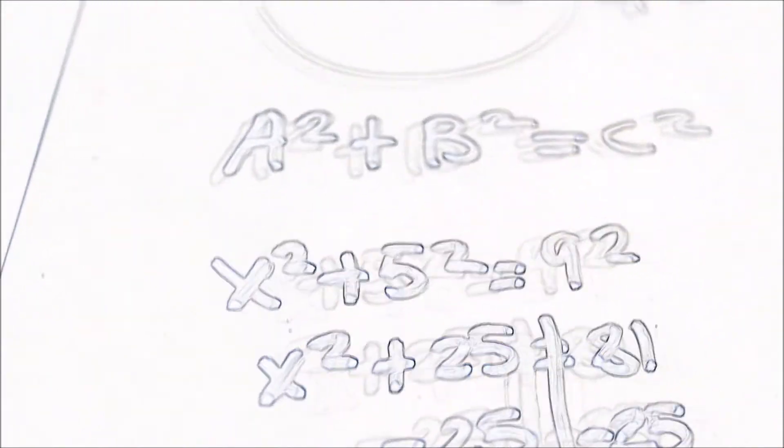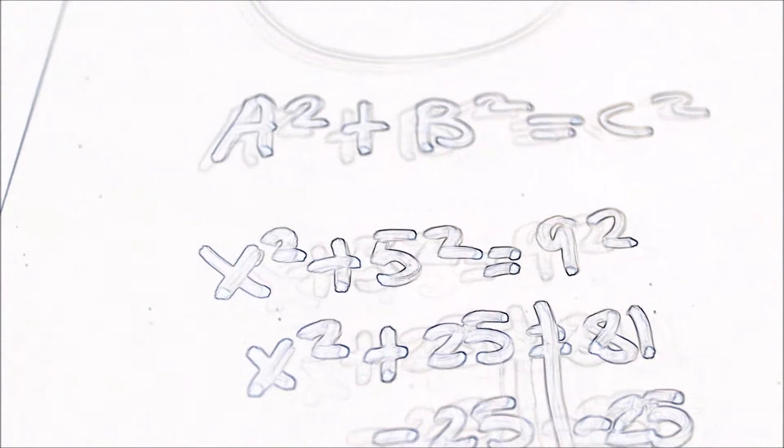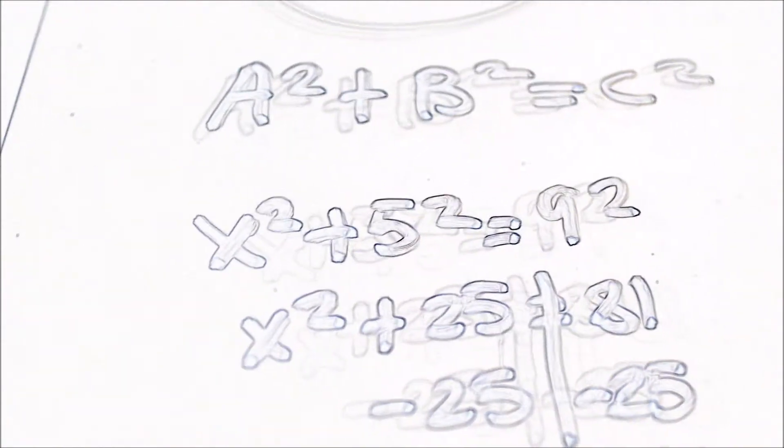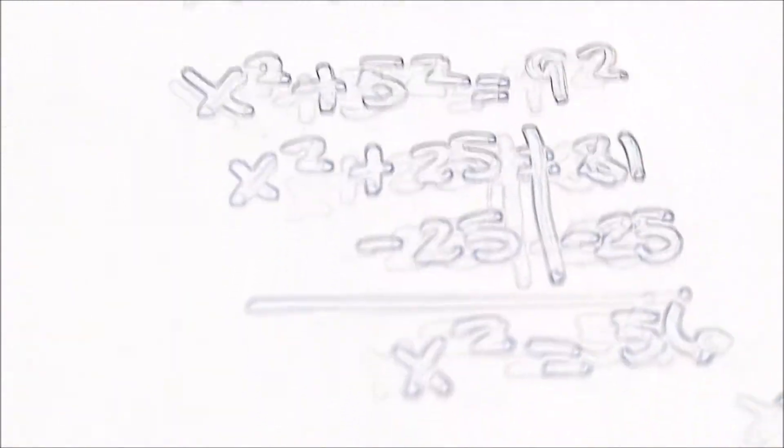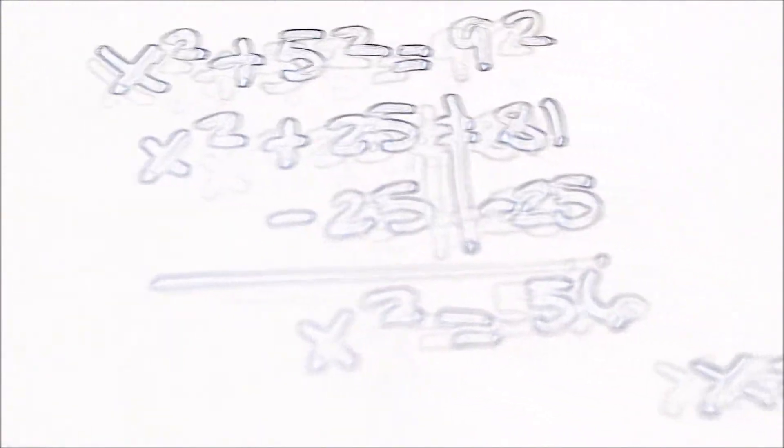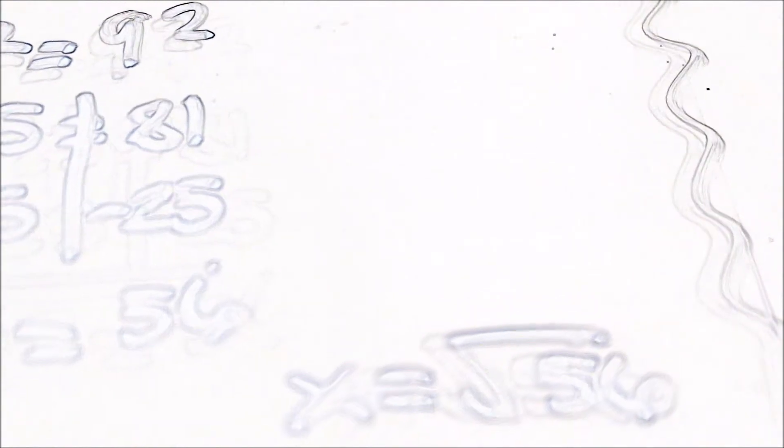Then it's X squared plus 25 equals 81. Then you turn it into a two-step equation. So you minus 25 on both sides. You get X squared equals 56. Then you get X equals square root of 56.